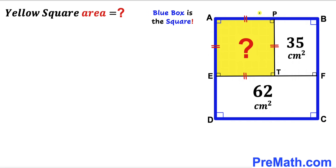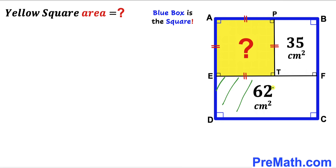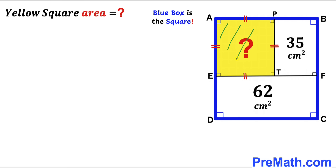Welcome to Premack. In this video we have a big blue square ABCD that consists of a yellow shaded square APTE, a smaller rectangle PBFT, and a larger rectangle EFCD. The area of the smaller rectangle is 35 cm², the area of the larger rectangle is 62 cm², and both the yellow shaded region and the big blue box are squares. Our task is to calculate the area of the yellow shaded square APTE.